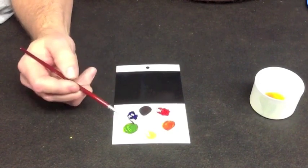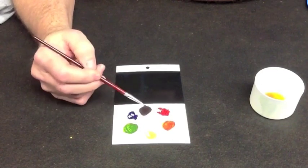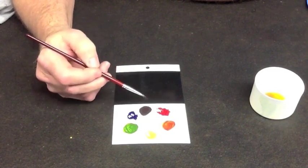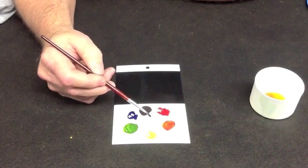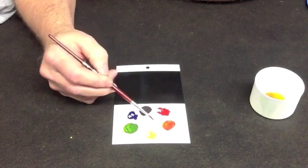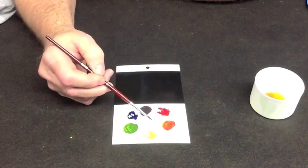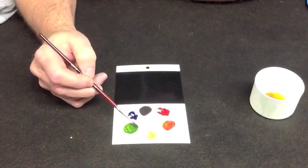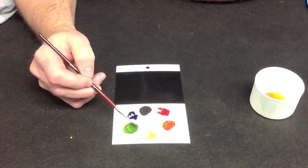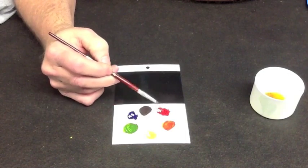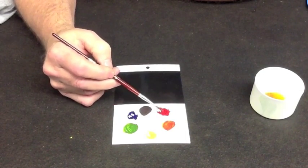Where this is important in touch up is if we have a panel that appears too red and our touch up appears too red, the easiest way to neutralize that red is to go straight across the color wheel to green. Green is what we would add to a color to soften or mute the red.